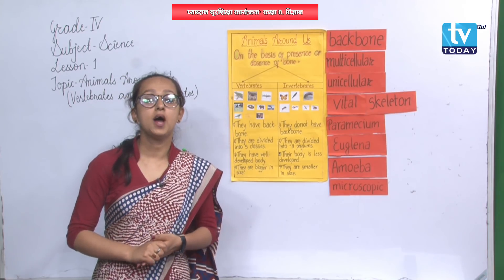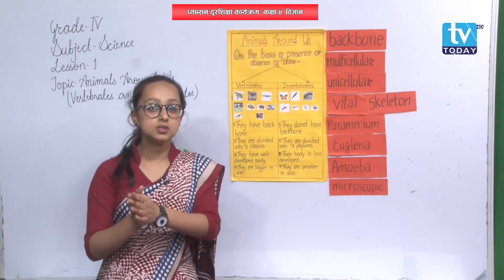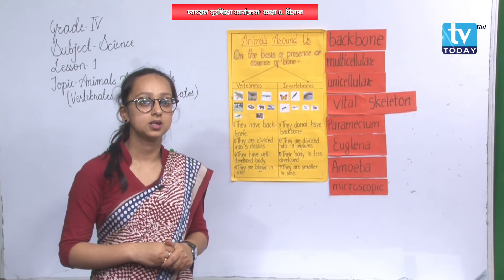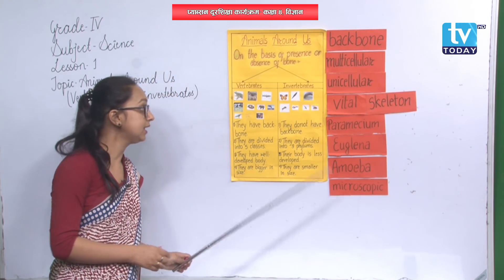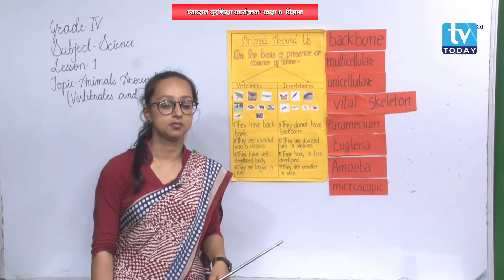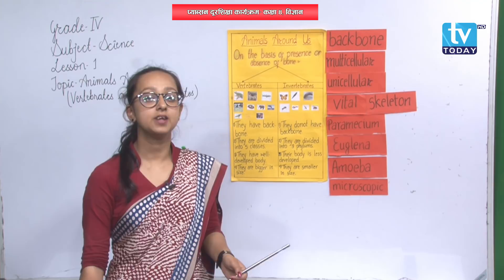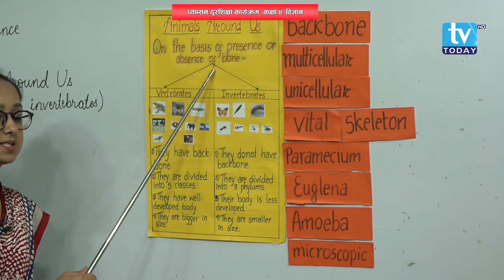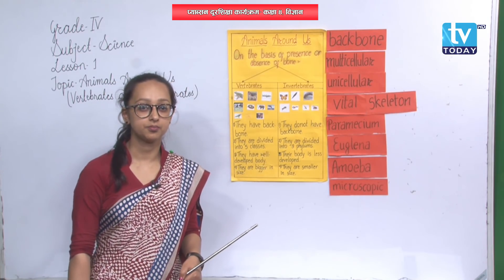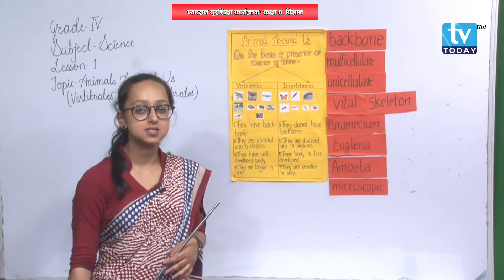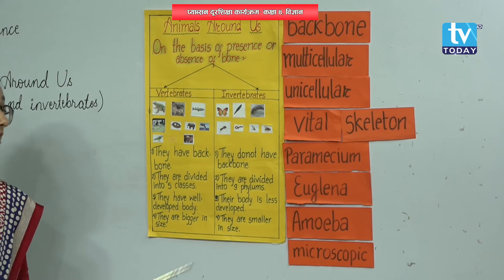So the only reason why earthworms and slugs cannot stand erect is because they lack backbone — they lack bones in their bodies. But we have bones in our bodies. Now, on the basis of presence or absence of bones, animals are divided into two groups: vertebrates and invertebrates.